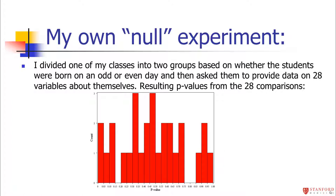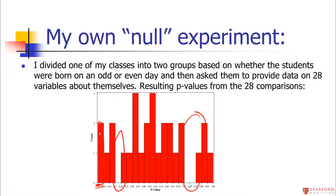We know the null hypothesis to be true because being born on an odd or even day shouldn't affect any of the variables. The histogram shows p-values ranging from 0 to 1 on the x-axis and counts on the y-axis. What distribution does a p-value follow when the null hypothesis is true? It follows a uniform distribution — completely random between 0 and 1. The surprising things your eye is drawn to are the gaps, like no p-values between 0.15 and 0.2, or between 0.75 and 0.85 — those are purely by chance.